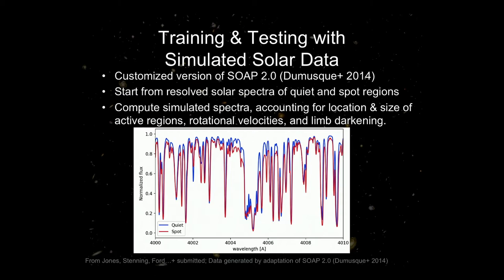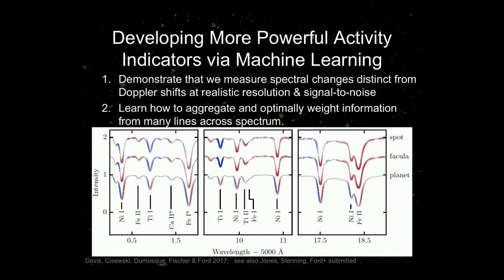From the simulated spectra, we try to teach the machine how to recognize which features are due to activity. The first step was simply asking: is there enough information to make this practical? We took a bunch of spectra, did PCA, and asked: if I put in realistic resolution and signal-to-noise with the next-generation instruments, could I extract more than one principal component? We found that at some resolutions and signal-to-noises, you couldn't recognize stellar activity as distinct from Doppler shift — the signal was only sufficient to get out one principal component, basically the Doppler shift. With next-generation instruments and high signal-to-noise observations, it will be possible to measure two, maybe even three principal components representing variability due to star spots in sun-like stars.